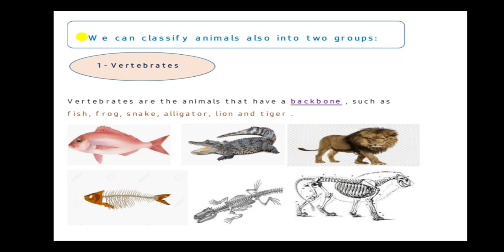What is the meaning of vertebrates? Vertebrates are the animals that have a backbone. Animals that have a backbone — like fish, frog, snake, alligator, lion, and tiger. All these animals are vertebrates.